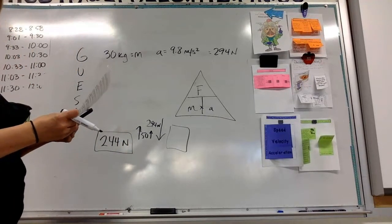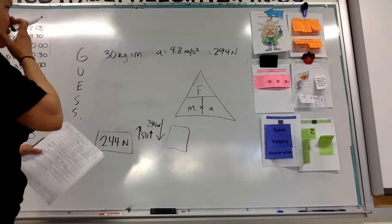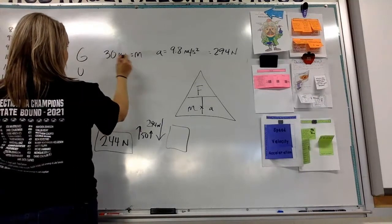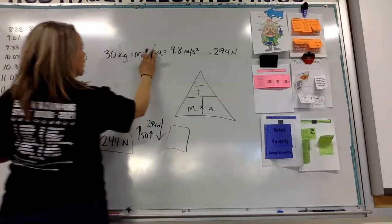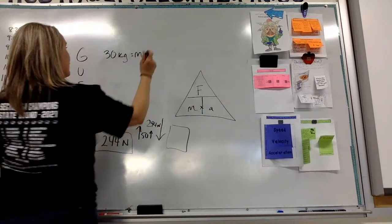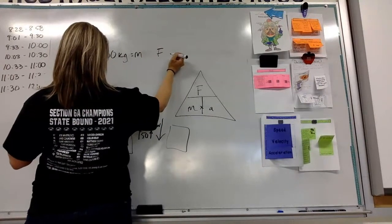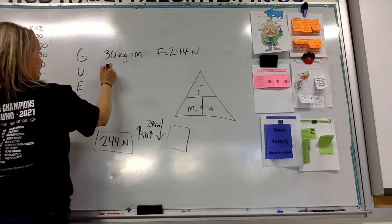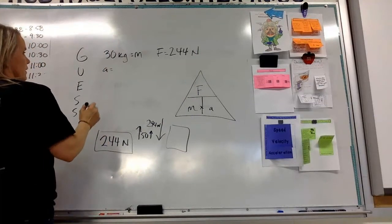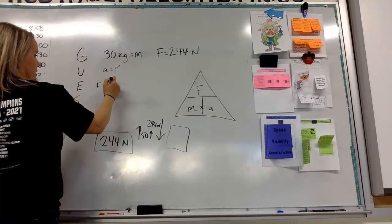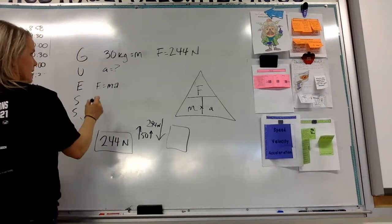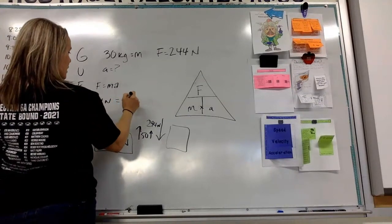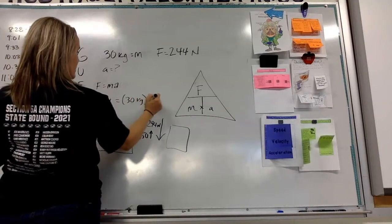And then the second part says, what is the acceleration? Well, that's when we can plug it right into here. We know that the mass is 30 kilograms. We don't know what the acceleration is yet, but we do know that the force is 244 newtons. So our unknown in this case is acceleration. Our equation again, F equals MA, and all we got to do is substitute. So 244 newtons equals 30 kilograms times an unknown A.